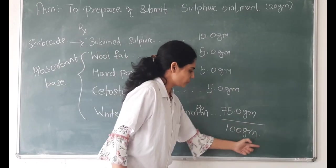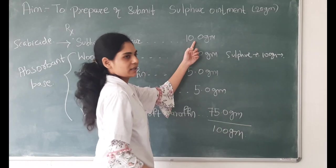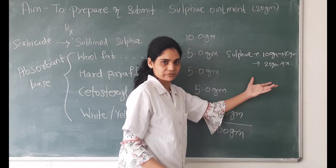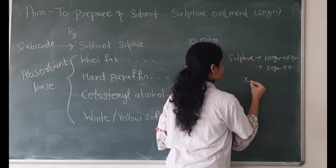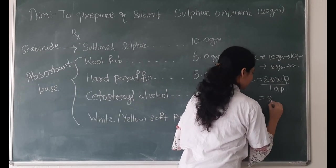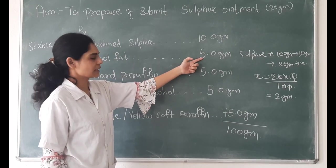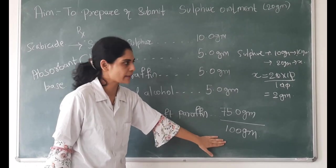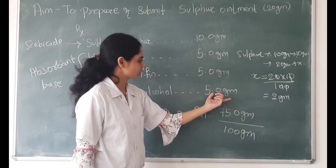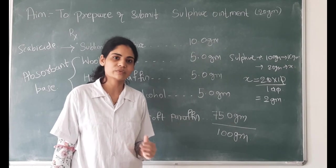This formula is for 100 grams. For 100 grams we require 10 grams of sulphur. So for 20 grams, x = (20 × 10) / 100, which gives us 2 grams of sulphur for the preparation of 20 grams of ointment. Similarly, we will calculate for all other ingredients — wool fat, hard paraffin, cetostearyl alcohol, and yellow soft paraffin — and once all values are calculated, we will proceed with the formulation.